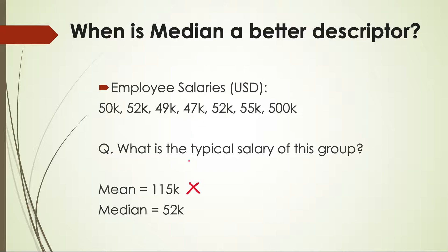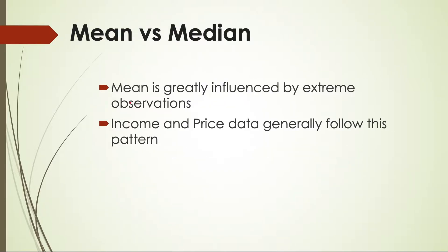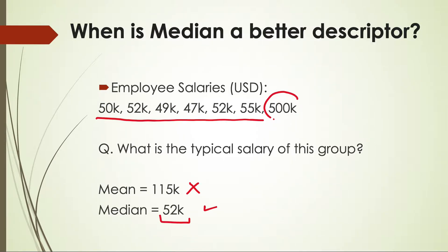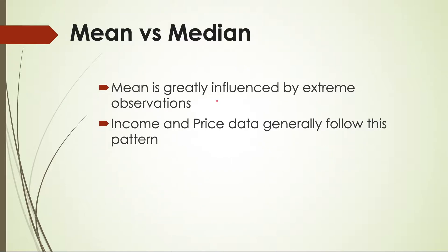The typical salary seems to be somewhere around 50K. If, on the other hand, we find the median, it says the median salary is 52K — meaning half the employees are below 52K and half are above. This is a pretty natural division and correctly reflects that typically salaries are around 50K. We see that mean is greatly influenced by extreme observations; in this case, 500K was the extreme value that impacted the mean. If we remove that salary, the mean would be around 50K, very close to the median. Mean is very susceptible to being affected by extreme observations, and income and price data generally follow this pattern.